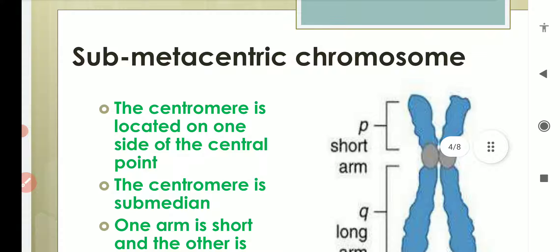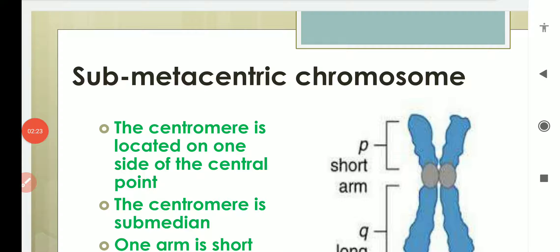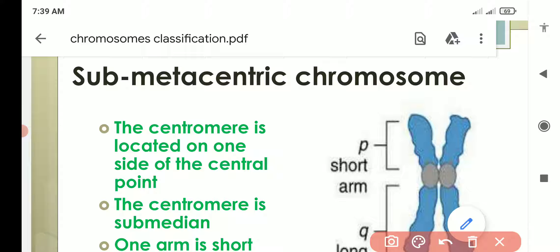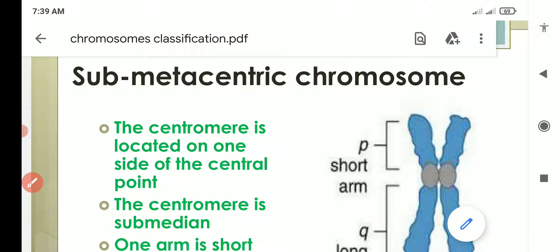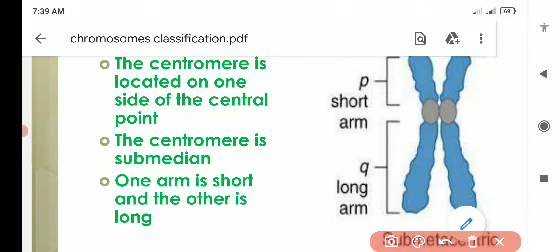Then, submetacentric chromosomes. Submetacentric chromosomes are those chromosomes which have the centromere away from the center — it is located on one side of the central point. When the centromere is located on one side of the central point, it is known as submetacentric. It is not present in the middle; it is present some distance away from the middle, but it is not near the end. In the image you can see that the centromere is present some distance away from the center, and that's why the chromosome is known as submetacentric chromosome.